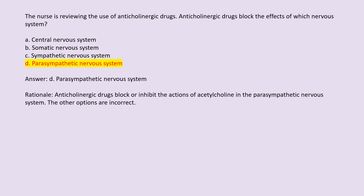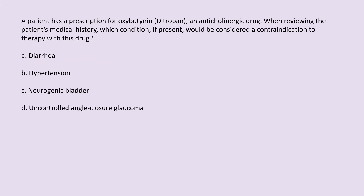A patient has a prescription for oxybutynin (Ditropan), an anticholinergic drug. When reviewing the patient's medical history, which condition, if present, would be considered a contraindication to therapy with this drug? A. Diarrhea. B. Hypertension. C. Neurogenic bladder. D. Uncontrolled angle-closure glaucoma.